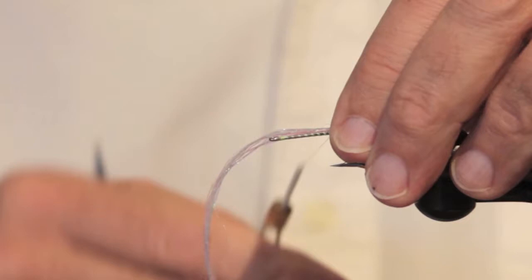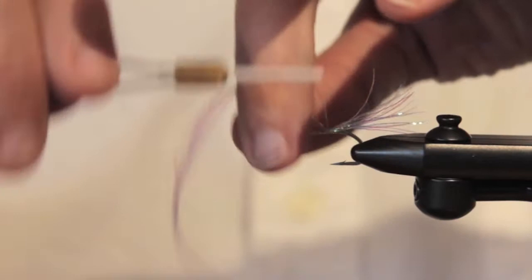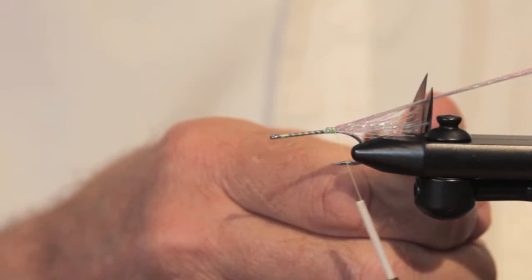You take a look here, when I tie in my, this is polar flash, wrap it forward a few turns, wrap it back on itself so it can't come loose, trim it.